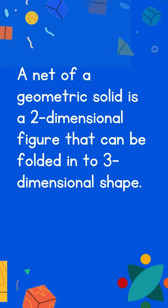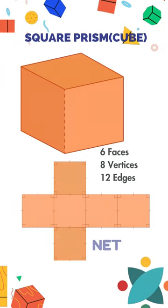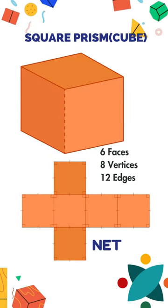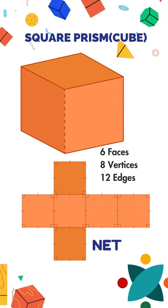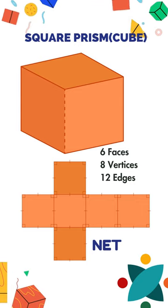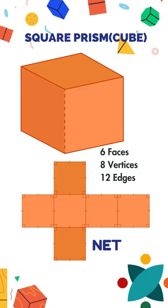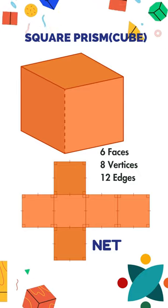For example, we know that a cube has six faces. Each face of a cube is a square, so we arrange six squares into a figure that can be folded into a cube. Here are a few examples of nets of solids.